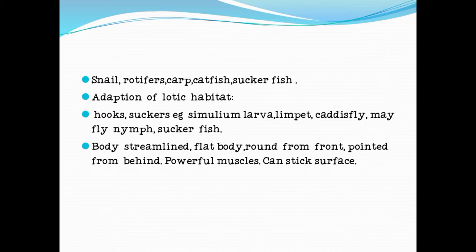Now comes adaptation of lotic habitat. What adaptations are present in animals? In lotic habitat, hooks are present for attachment because water is running. Suckers are present — that is simulium larvae, limpet, caddis fly, mayfly nymph, sucker fish — attachment organs are present in all. Body is streamlined — flat body, round from front and pointed from behind. Powerful muscles are present for attachment; they can stick to the surface. Thank you.